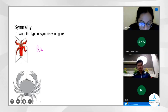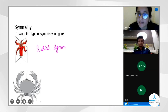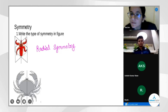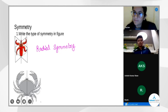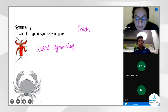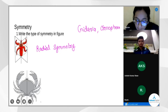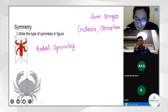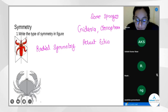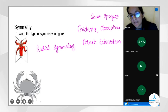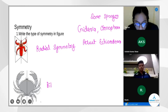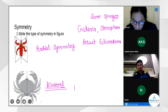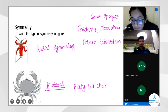The first diagram shows radial symmetry. Rudra explains: there are many planes passing through one axis. Radial symmetry is observed in phylum Cnidaria and Ctenophora. Some sponges also show radial symmetry. The next diagram shows bilateral symmetry. Bilateral symmetry starts from phylum Platyhelminthes and continues through to Chordata.